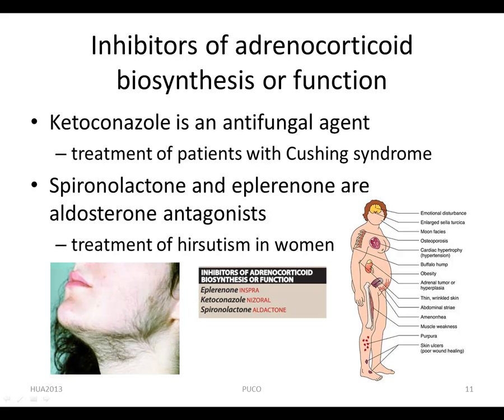Ketoconazole is an antifungal agent that strongly inhibits all gonadal and adrenosteroid hormone synthesis, and it is used in the treatment of patients with Cushing syndrome. Spironolactone, an antihypertensive drug, competes for the mineralocorticoid receptor and thus inhibits sodium reabsorption in the kidneys. It can also antagonize aldosterone and testosterone synthesis, and it is effective against hyperaldosteronism.